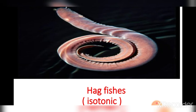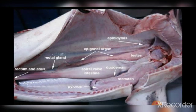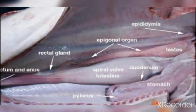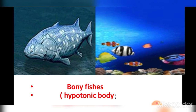So hagfish are osmoconformers. The next example is cartilaginous fishes. They live in marine water, meaning salty water, so they need to remove excess salt from their body. They use their gills to remove excess salt, and there is another gland known as rectal glands that also removes excess salt. As you can see in this picture, there are rectal glands.